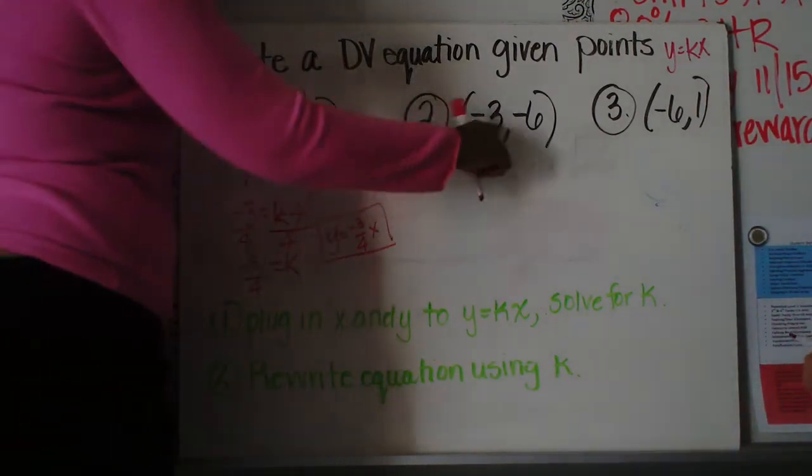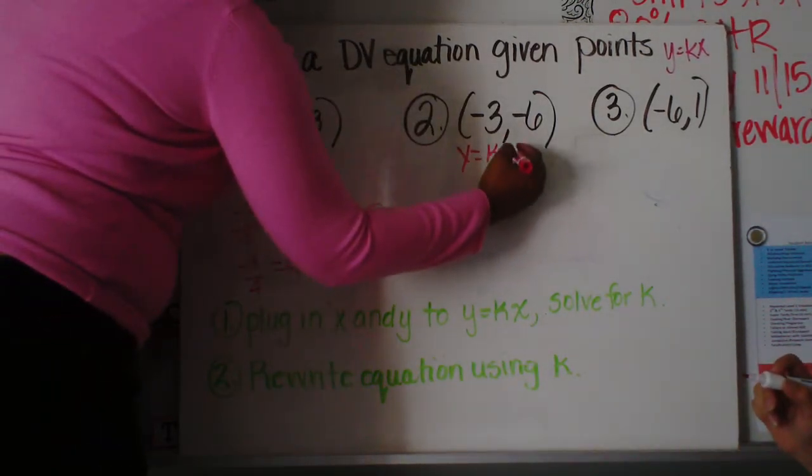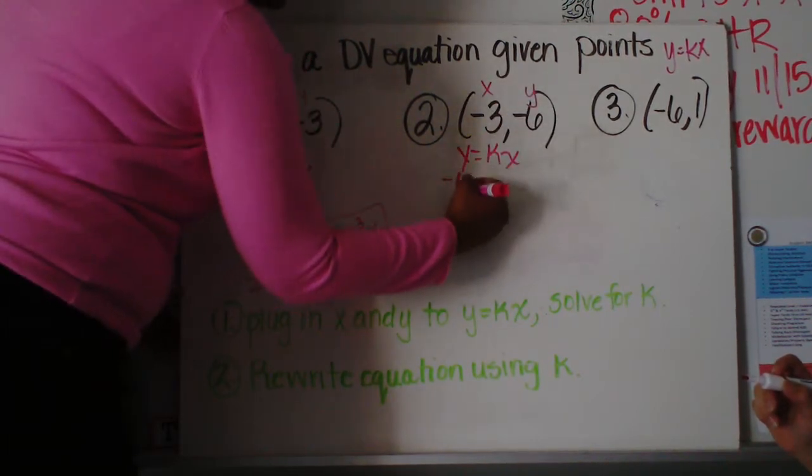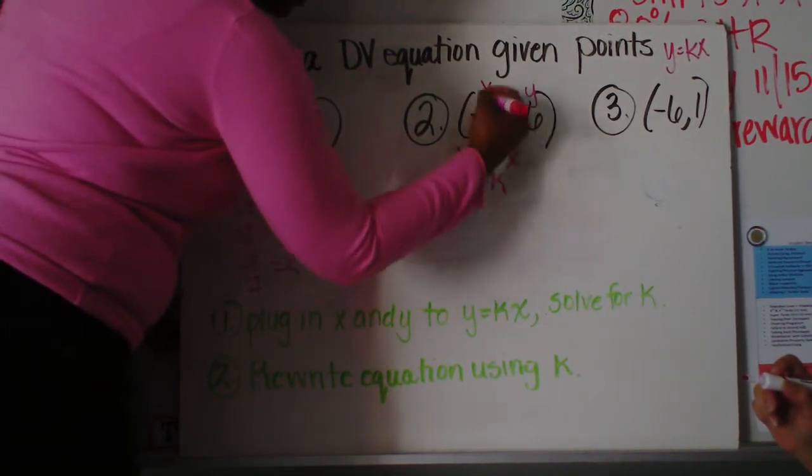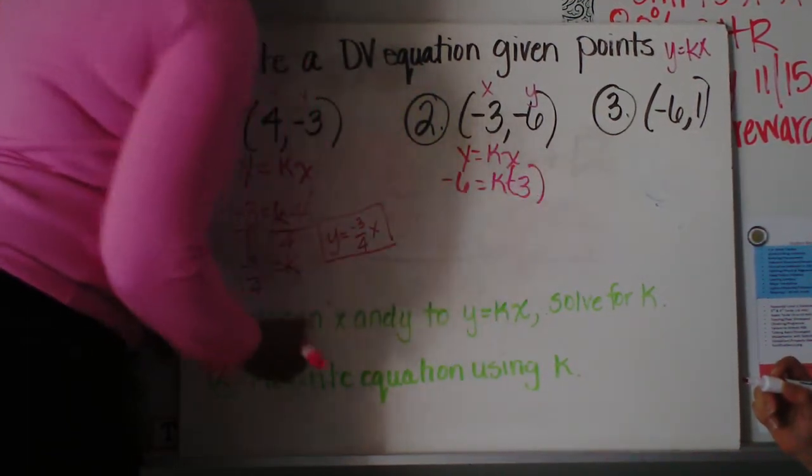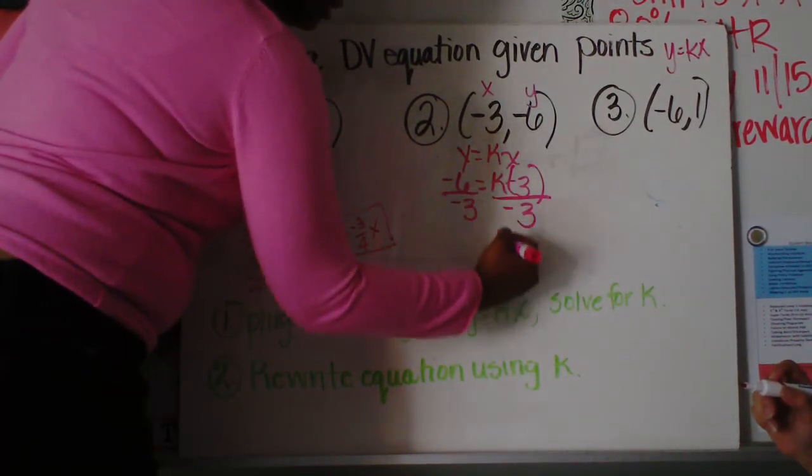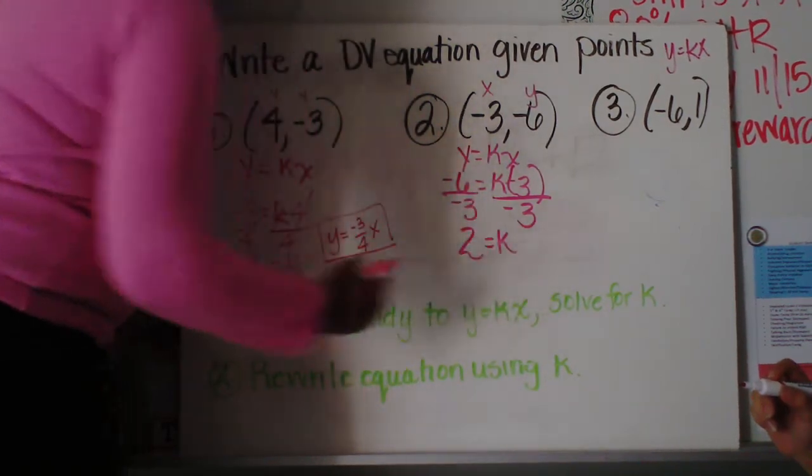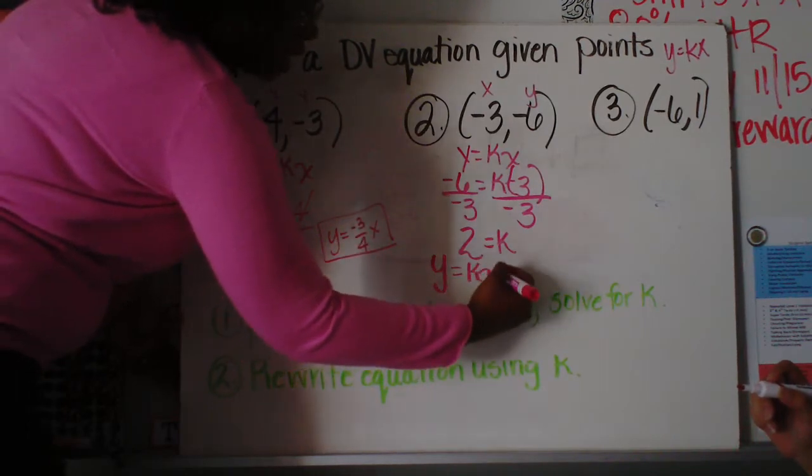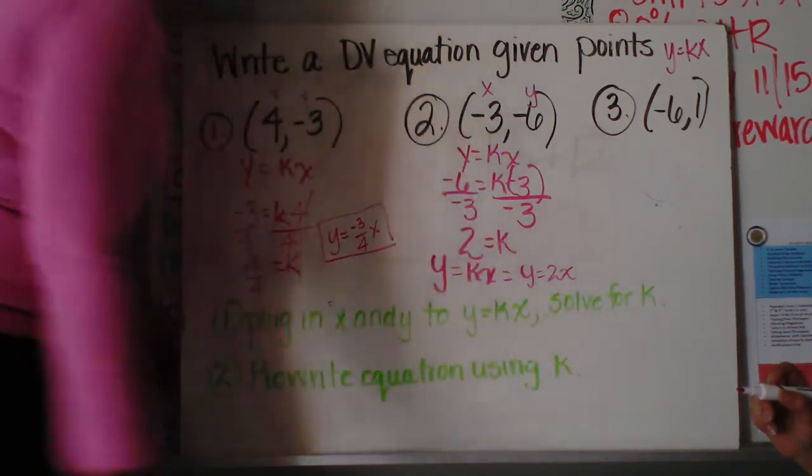Okay, so we're going to do some more examples. We have negative 3 and negative 6. We're going to do y equals kx. So we're going to plug in the x and y values. So y is negative 6. We don't know k, and x is negative 3. So this is multiplied by negative 3. So we're going to divide both sides by negative 3. And when I simplify, I end up with k equaling positive 2. So again, remember what Ms. Hamlet said. You need to write it in y equals kx. So you're going to plug in k here. So you end up with y equals 2x.